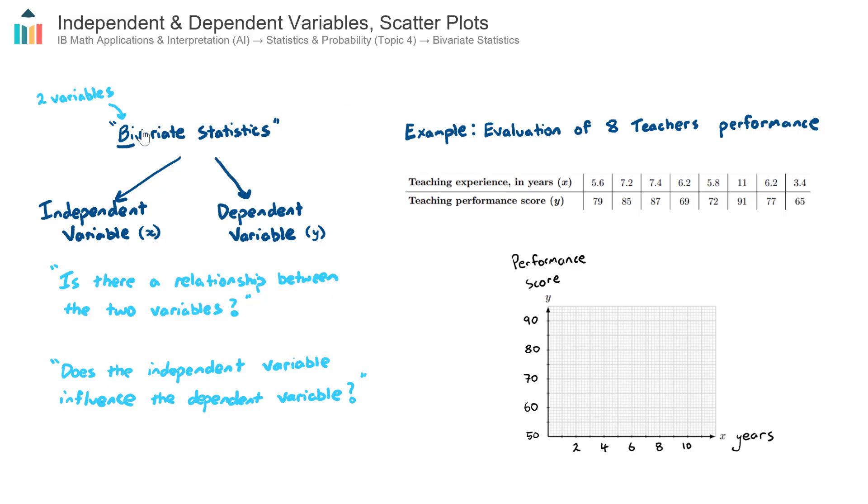Bivariate statistics - think bi in terms of a bicycle having two wheels - means we now have two variables. So up until now, you may have encountered questions that has one variable, such as the number of students in a room, or the amount of money in a bank account, or the amount of marbles in a bag. That's all just one variable.